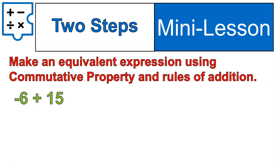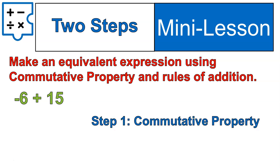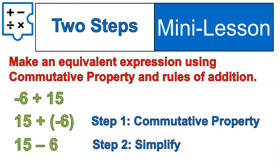If I have something like this, negative 6 plus 15, that might look like a challenging question. Step number one is that I am going to use the commutative property to change this into being 15 plus negative 6. Then I'm going to simplify this to being just 15 minus 6.